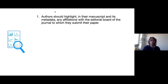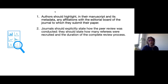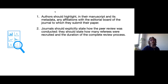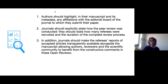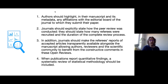That's why we came up with these recommendations: authors should always highlight in the manuscript and its metadata any affiliation with the editorial board of journals to which they submit. Journals should explicitly state how the peer review process was conducted — how many referees were recruited, how long recruiting took, how long each review lasted, and how long editorial decisions took. We also want reviewer reports made available transparently with the manuscript, so authors, reviewers, and the scientific community can benefit from and check how thorough the open reviews were. For publications reporting quantitative findings, statistical methodology reporting should be conducted by statisticians.